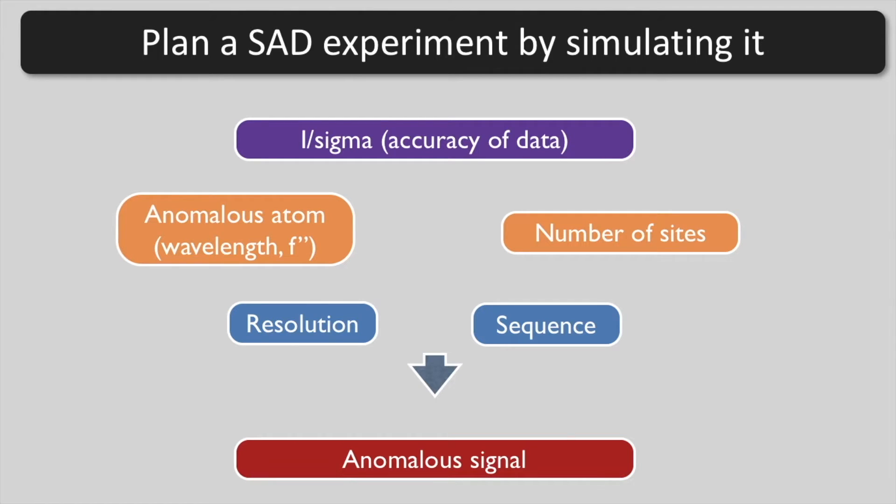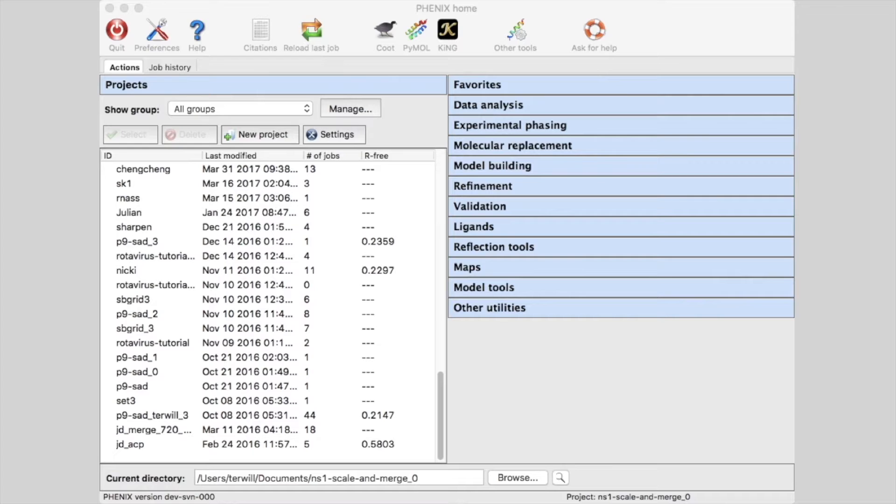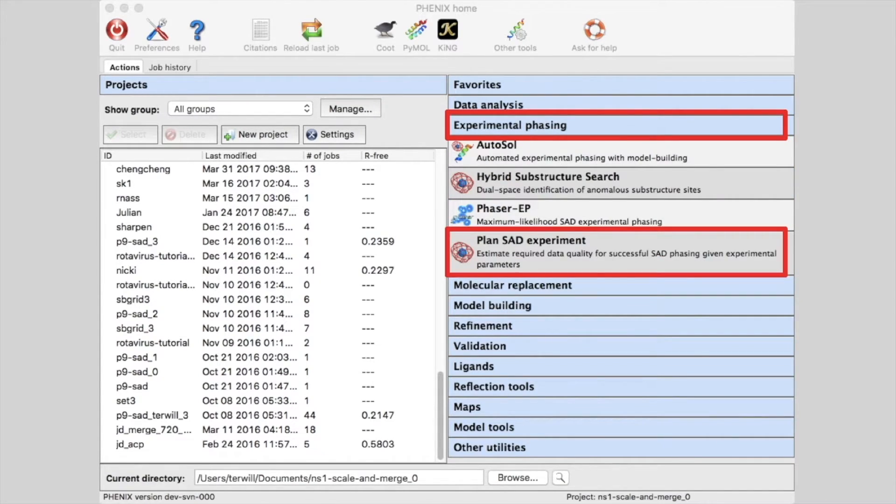In the main Phoenix GUI, under Experimental Phasing, select Plan SAD Experiment. A new Plan SAD Experiment window will open.